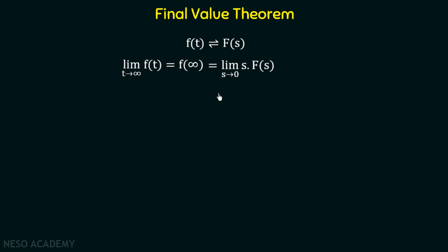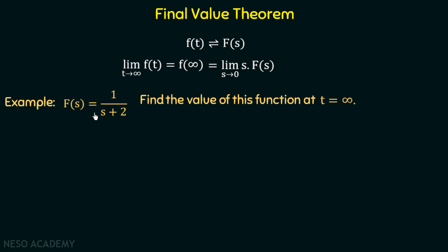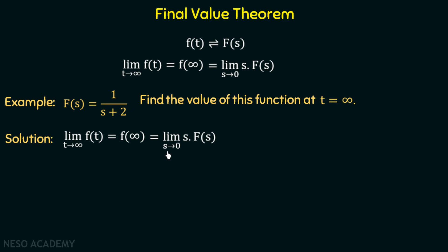We will understand the final value theorem with the same example: F(s) equal to 1 over s plus 2; find the value at t equal to infinity. The final value is limit t tending to infinity of f(t), which equals limit s tending to 0 of s times F(s). Substituting F(s) equal to 1 over s plus 2, we have limit s tending to 0 of s times 1 over s plus 2. Substituting s equal to 0 gives the limit equal to 0. So the final value of this function is 0, calculated using the final value theorem.